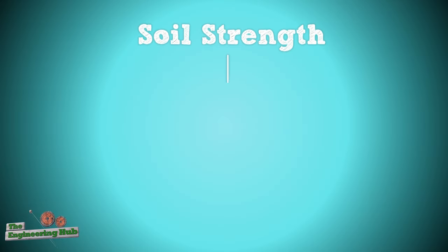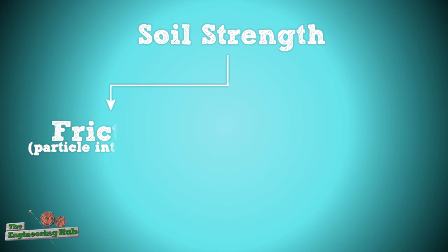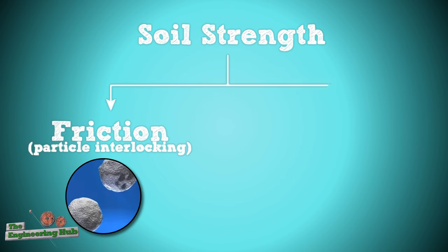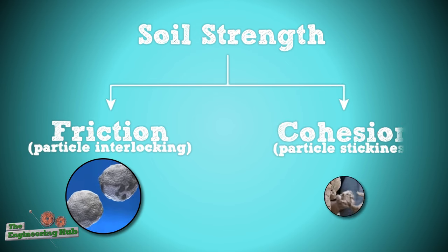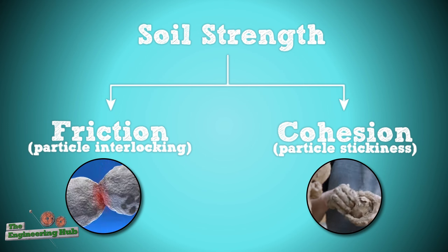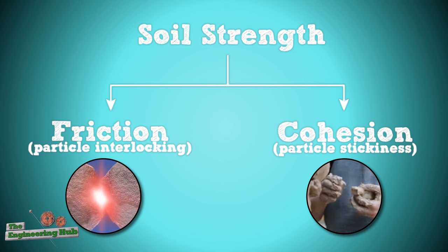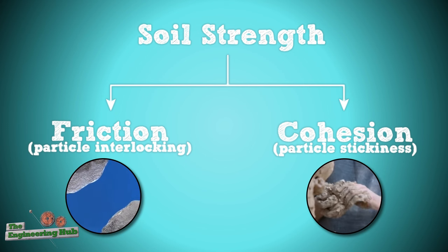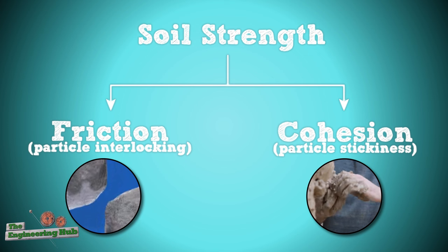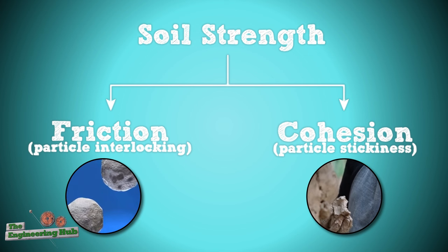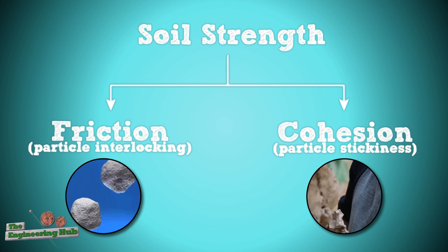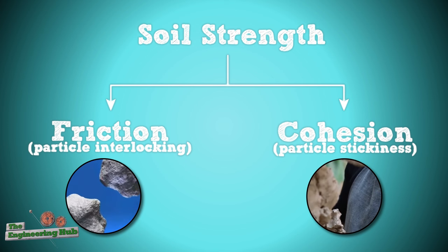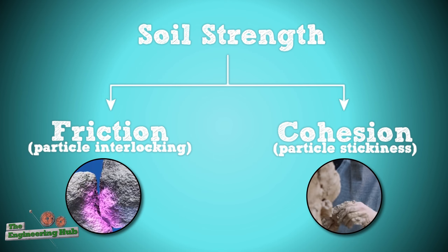Besides the interlocking or frictional strength, soils also possess cohesive shear strength. Cohesion, in practical terms, represents the stickiness of the soil, such as in clays, but is usually zero for coarse-grained soils like sands and gravels.